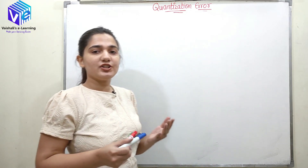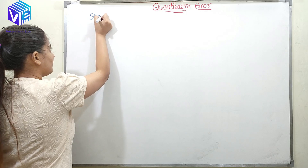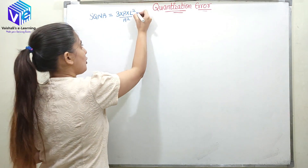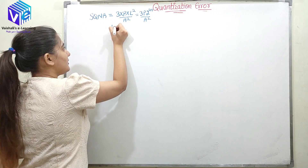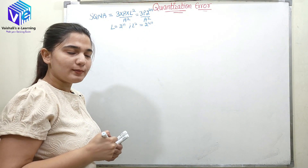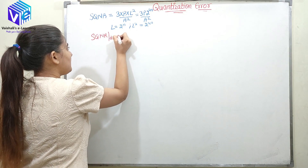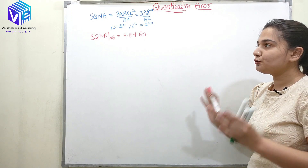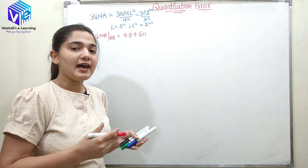In my previous video I have already found out the generalized expression for the signal to quantization noise ratio. The SQNR was represented by 3PL squared upon A squared, or 3P times 2 raised to power 2N upon A squared, because L was 2 raised to power N, so L squared would be 2 raised to power 2N. In dB, SQNR was equal to 4.8 plus 6N, where N is the number of bits. If you have any doubt in these equations you can go to my previous video where I explained and derived them.